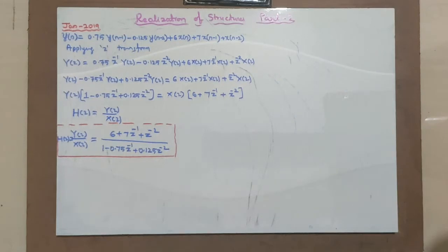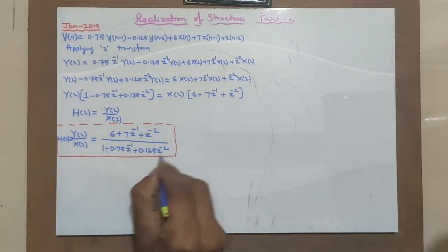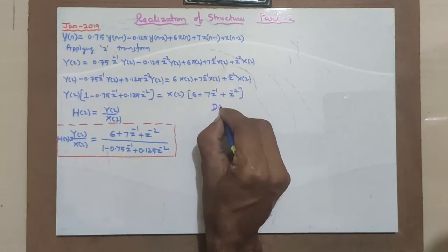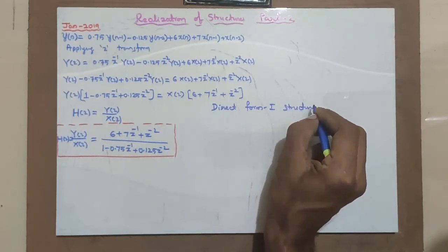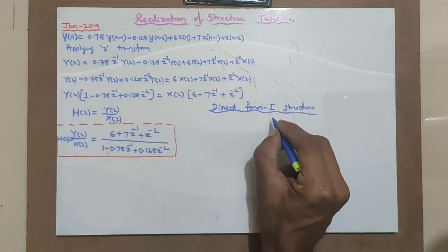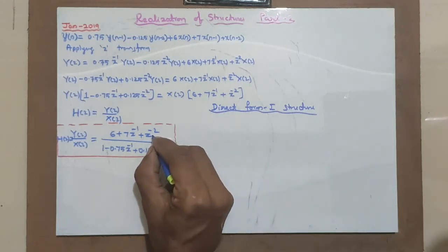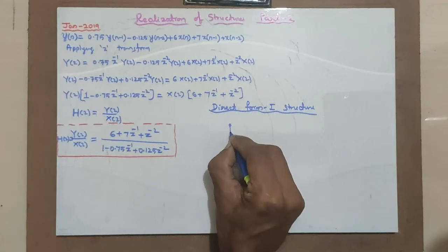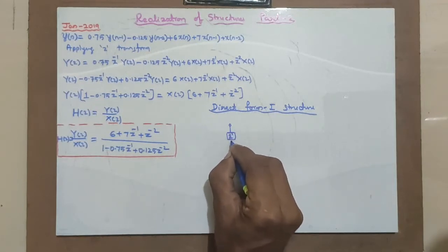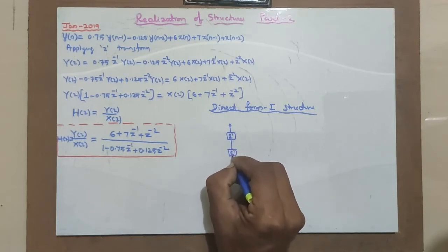Once you have got H of Z, you can implement or realize different structures like direct form 1, direct form 2, etc. Let us implement direct form 1 structure. For direct form 1, you have to have the input side at the input point. I shall have delay elements Z raised to minus 1. Two delay elements are required.